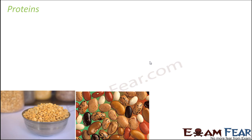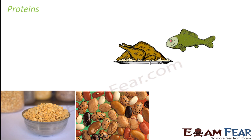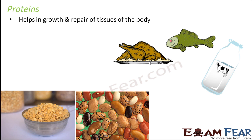Next, let us talk about proteins. Common food items that are a rich source of proteins include pulses, fish, meat, and milk. Proteins help in the growth and repair of tissues of the body. When you look at the composition of the body of any living organism, you can understand their role more clearly.